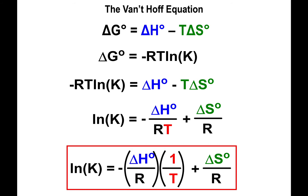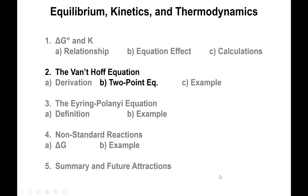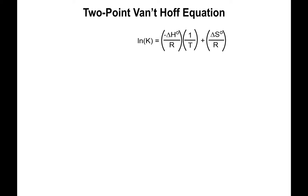This equation looks a lot like the Arrhenius equation — just be careful: this has big K, which represents the equilibrium constant, not little k, the rate constant. The slope equals negative ΔH over R, and the y-intercept is ΔS over R. I'm going to show you an example using the two-point equation version of the Van't Hoff equation.